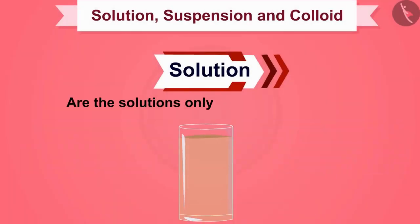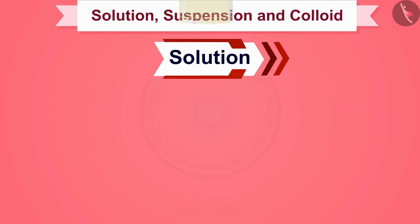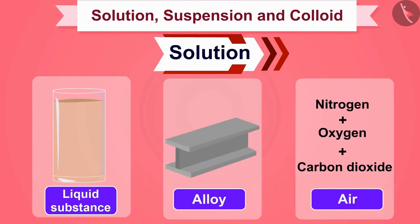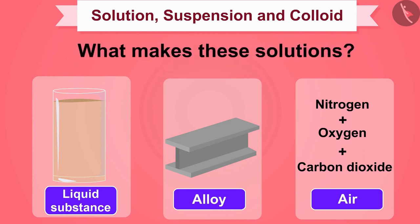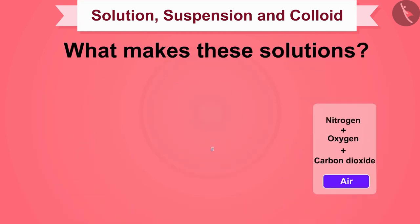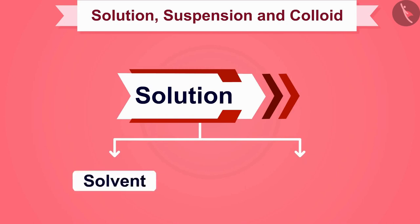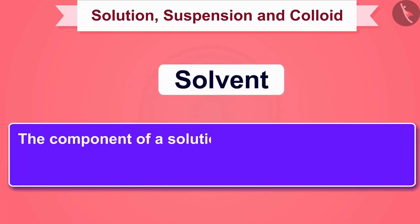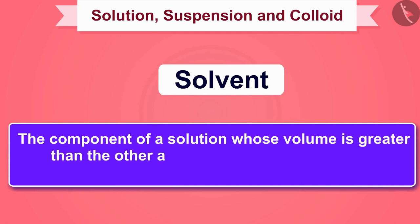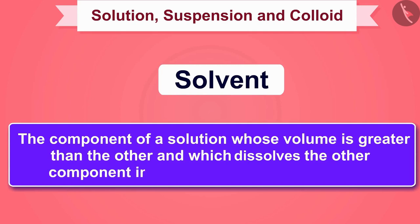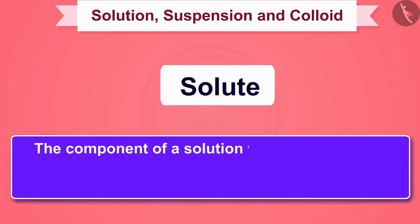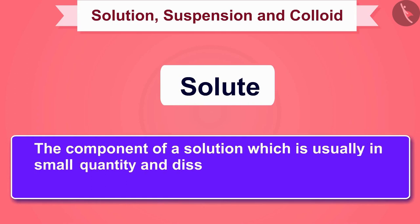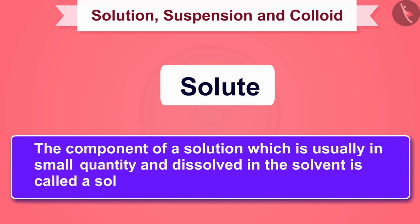Are solutions only in the form of liquid? No. We can also have solid solutions such as alloys and gaseous solutions such as air. We can divide any solution into two parts: solvent and solute. The component whose volume is greater and which dissolves the other component is called a solvent. The component which is usually in small quantity and dissolved in the solvent is called a solute.